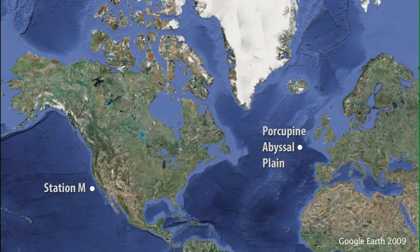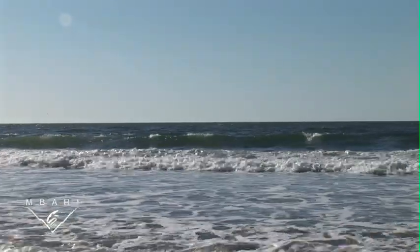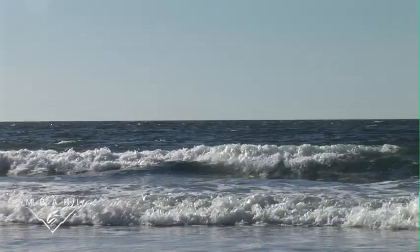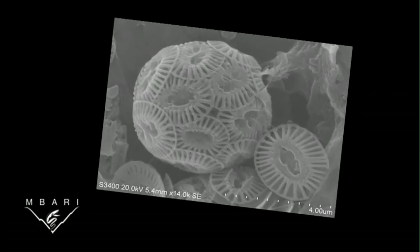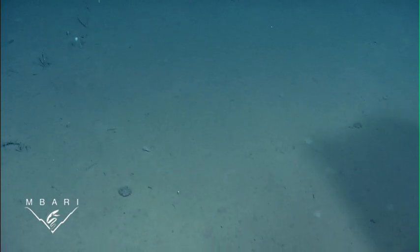Long-term studies from the Pacific and Atlantic Oceans by MBARI's Dr. Ken Smith and his colleagues show that changes in conditions at the surface of the ocean affect biological communities in the deep sea. Microscopic plants called phytoplankton form the basis of the oceanic food web. Natural and human-caused climate changes influence the availability of nutrients to shallow water phytoplankton, causing fluctuations in their numbers. This causes variation in the amount and quality of food supplied to the abyssal plain.